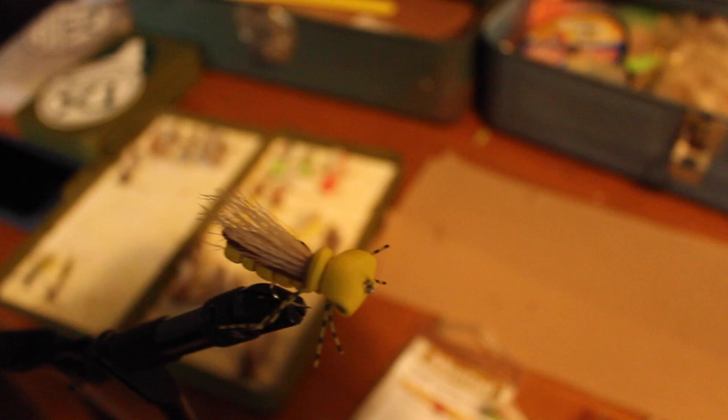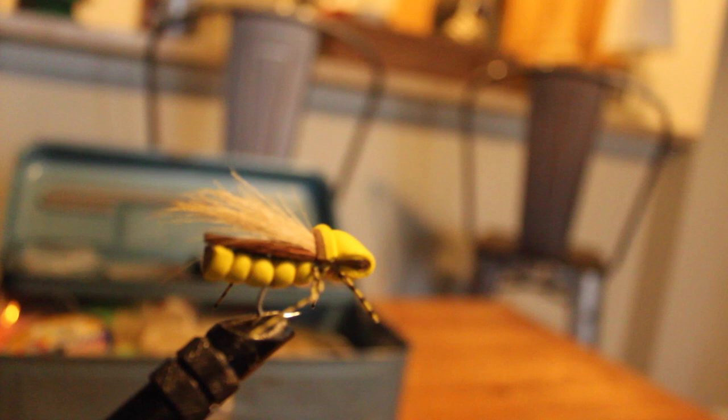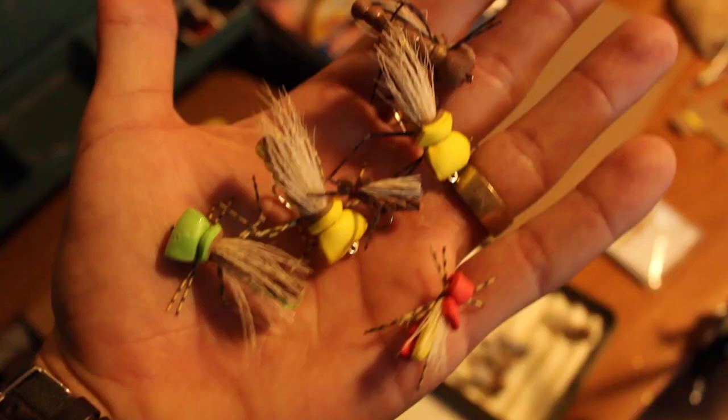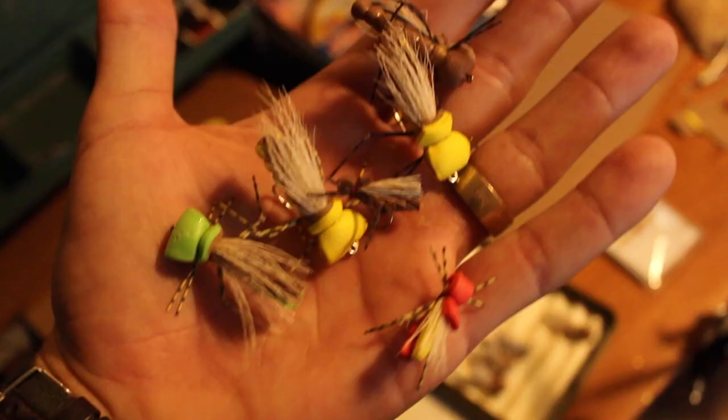And there you have it. Nice little hopper ready for some bass fishing in the spring. I hope that helped y'all out. If you use this pattern with success, go ahead and tag us on Instagram at Texas Angler. We'd love to see your pictures.